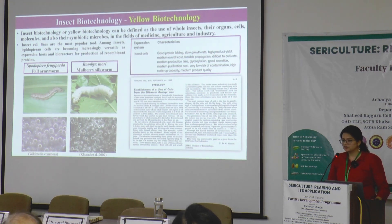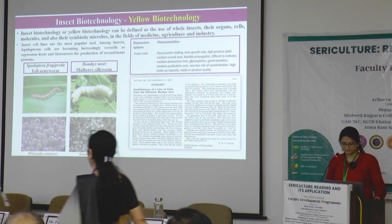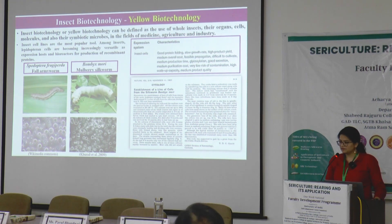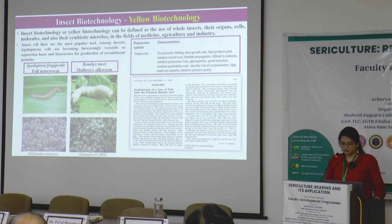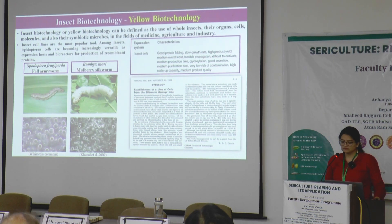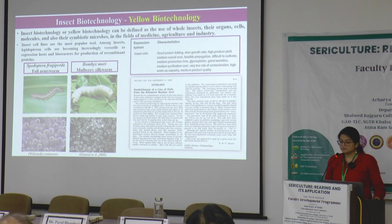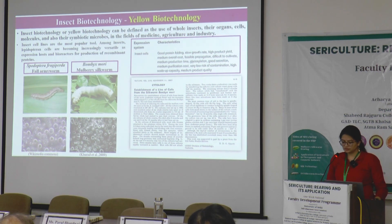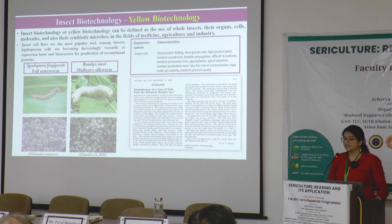The most popular and widely used application of biotechnology for insect cells is the development of insect cell lines. There are more than 1000 insect cell lines known, developed from Spodoptera, the fall armyworm, and Bombyx mori. Slow growth rate, low risk of contamination, and high scale of capacity are some characteristics of these insect cells. The screenshot here shows the first paper published for establishment of a cell line from the silkworm Bombyx mori in 1967.